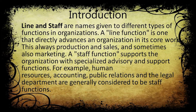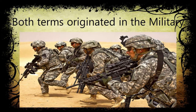Where there is a chair job, that will be the staff function. Where there is active work — production, marketing, and sales — these are line functions. Both are important to the organization. The terms originated from the military, where field soldiers are the line, and departments like advisory, strategy, accounts, and legal — those who stay at one place — are the staff functions.